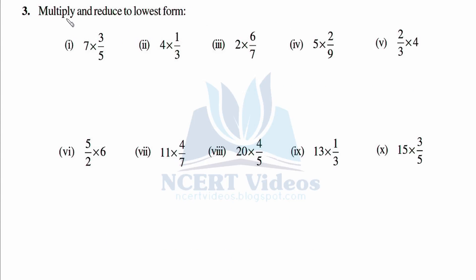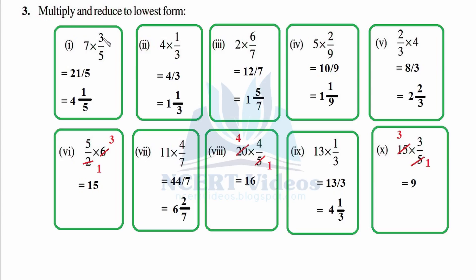Question number three: multiply and reduce to lowest form. First we will multiply all, then reduce to lowest form — meaning no common factor should remain. The first one: seven times three is 21 over five times five = 25. To reduce it: five fours are twenty, therefore four whole parts with remainder one, giving four and one over five.